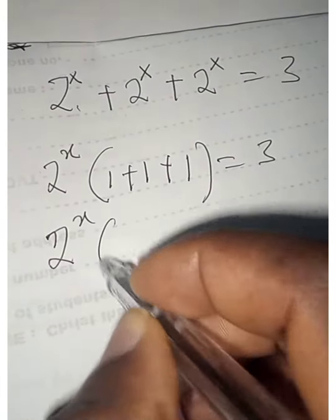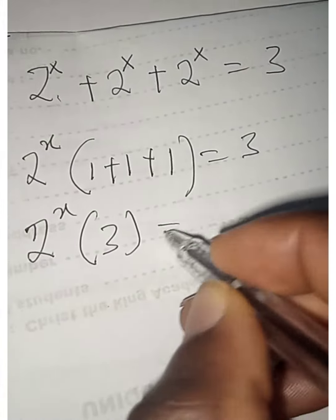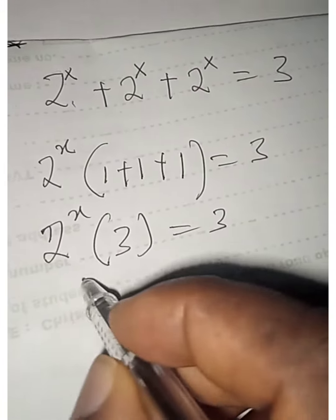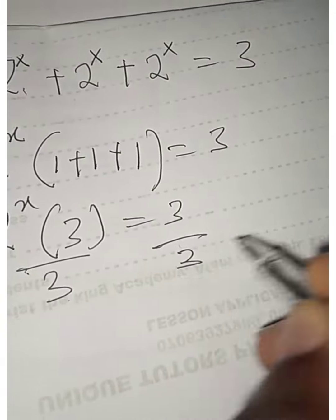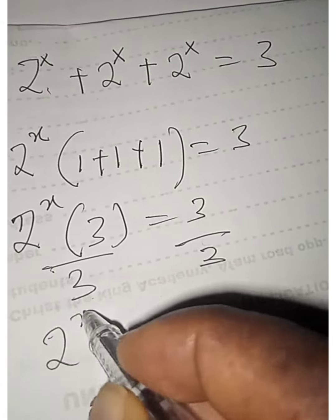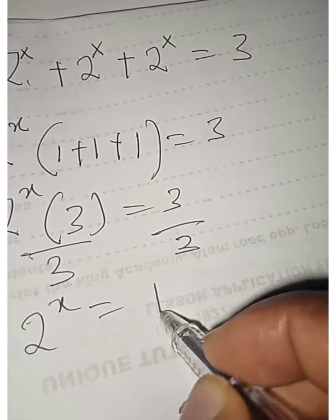So we're going to have 2 raised to power x into 3 equals to 3. So we divide both sides by 3. 2 raised to power x equals to 1.